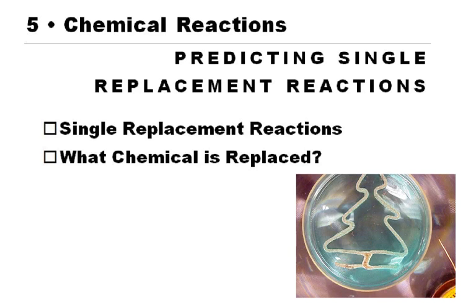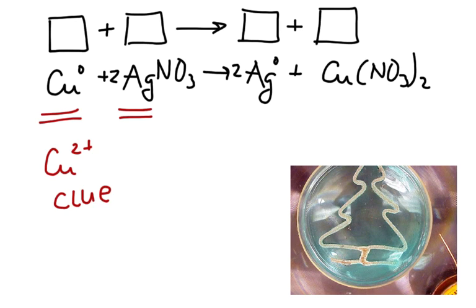I want to take a very quick look at predicting single replacement reactions. First, we're going to review how single replacement reactions look so you can tell one when you see one. But then we have to figure out which chemical is actually getting replaced. We have a demonstration from Christmas where we have a silver nitrate solution and we put in copper metal — that was a single replacement reaction. Let's look at that more closely.